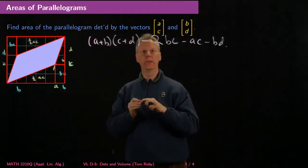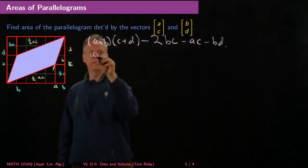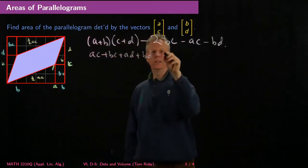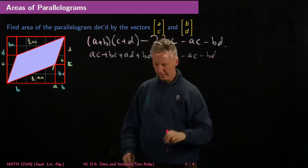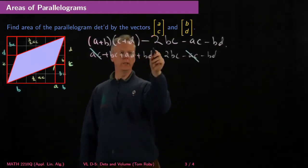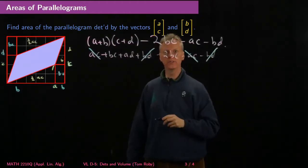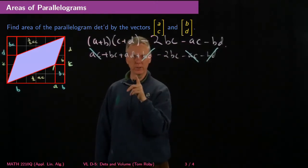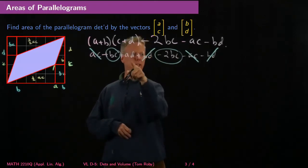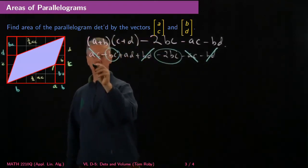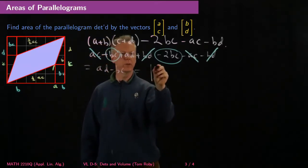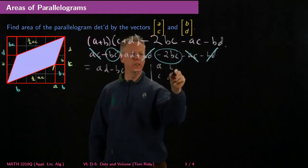Now you just expand this: it's AC + BC + AD + BD, and then subtract minus 2BC minus AC minus BD. The AC terms cancel, the BD terms cancel, and BC + (−2BC) gives −BC, leaving AD − BC. So at the end, this equals AD minus BC, which is of course the determinant of the matrix [A, B; C, D], thought of as having these two column vectors.